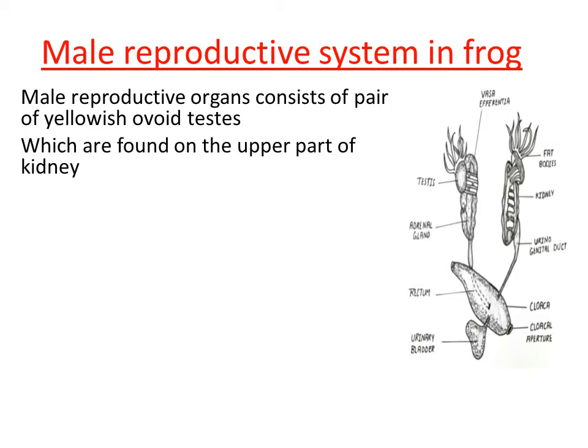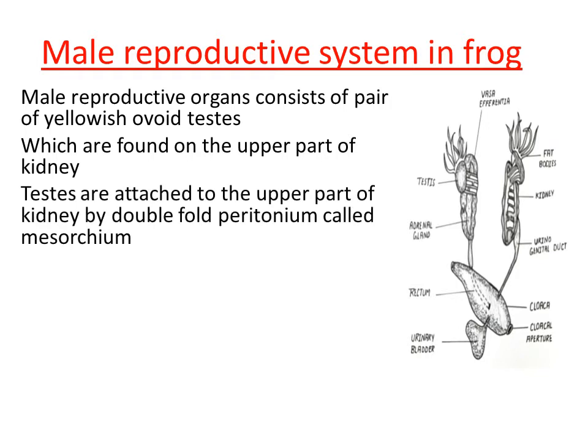When the testes are located on the upper part of the kidney, there is some tissue needed for their attachment. A double fold peritoneum helps in the attachment of testes with the kidney. That double fold peritoneum is called mesorchium. Mesorchium is a double fold peritoneum that gives attachment of testes with the kidney — this is a very important concept.